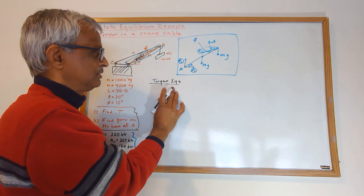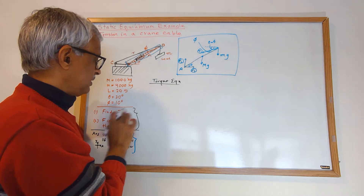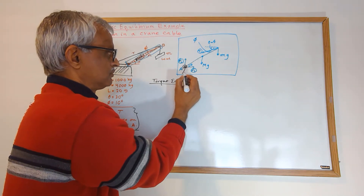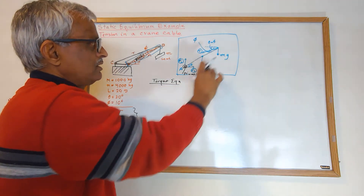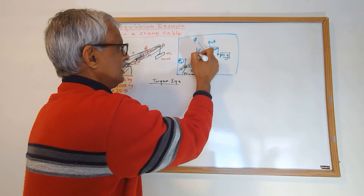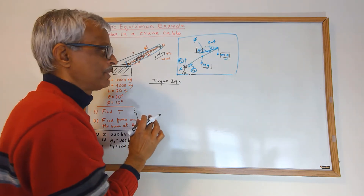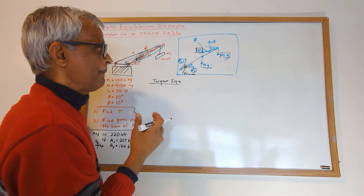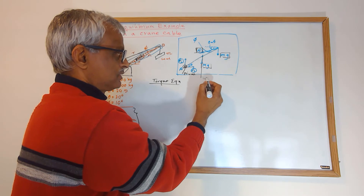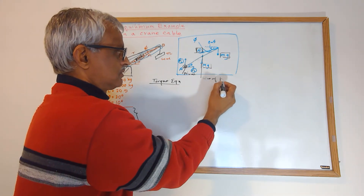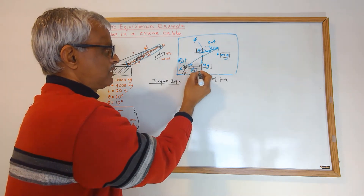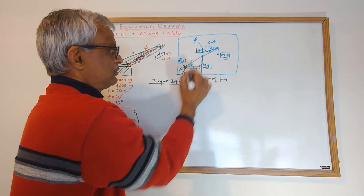For the torque equation, I choose a pivot point at A to eliminate the unknown forces F1 and F2, since they pass through A. I'll find the torque of all other forces about this pivot. To find the lever arm for MG, I extend the line of force and drop a perpendicular to the pivot — that gives me L/2 cosine theta.